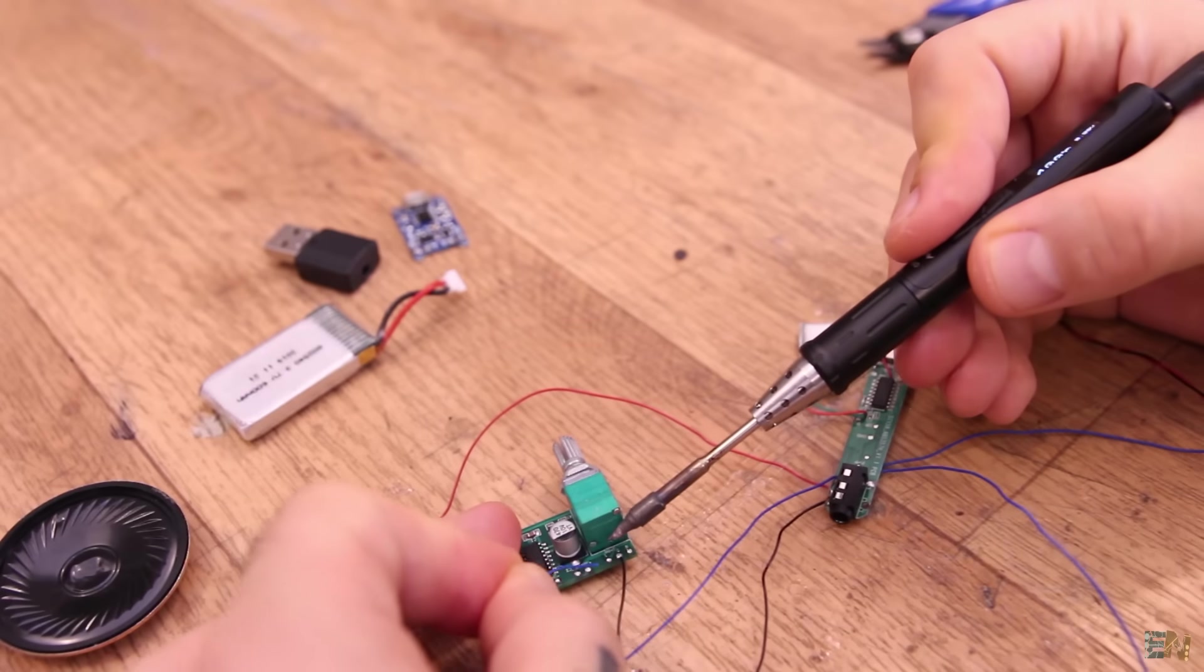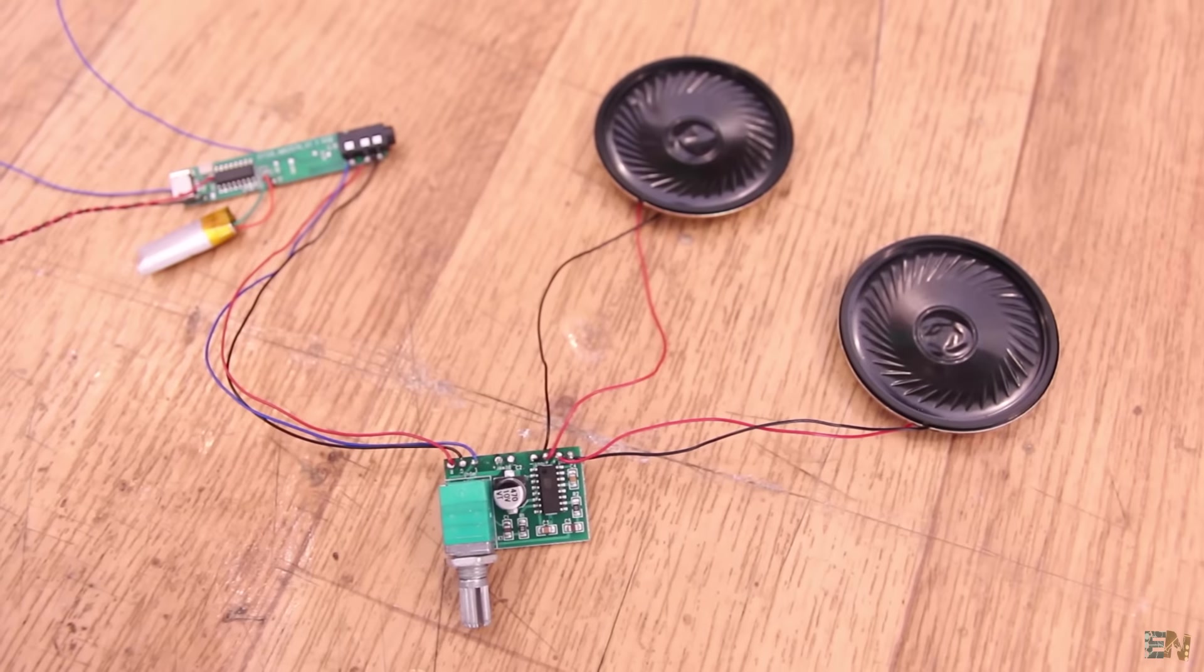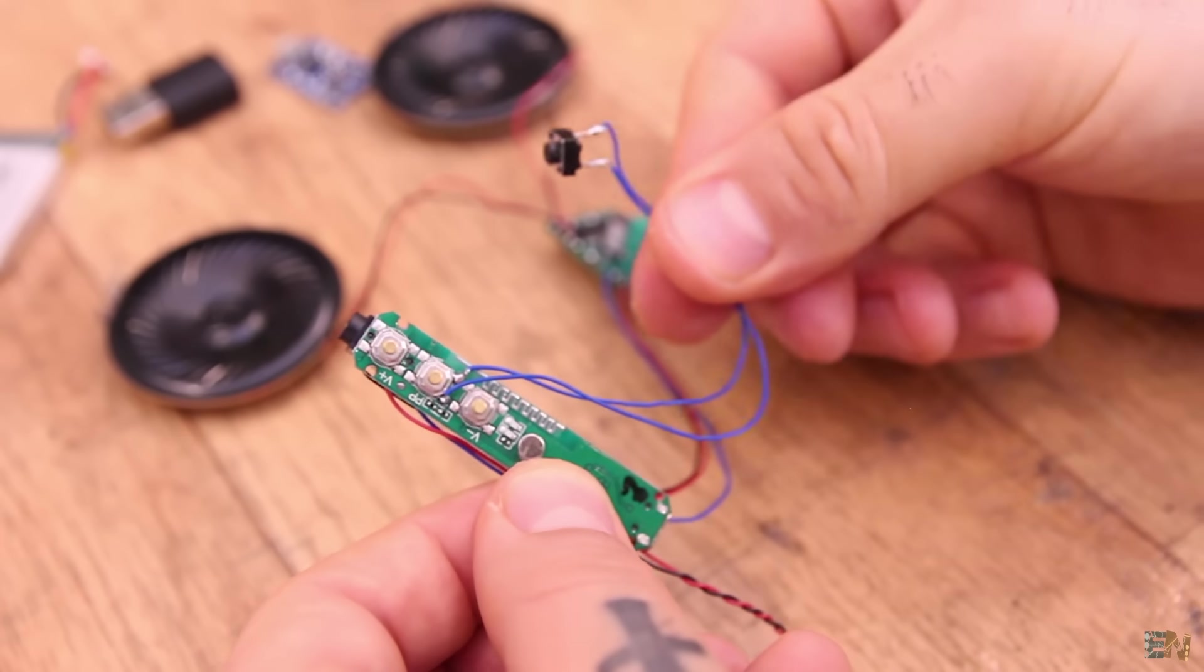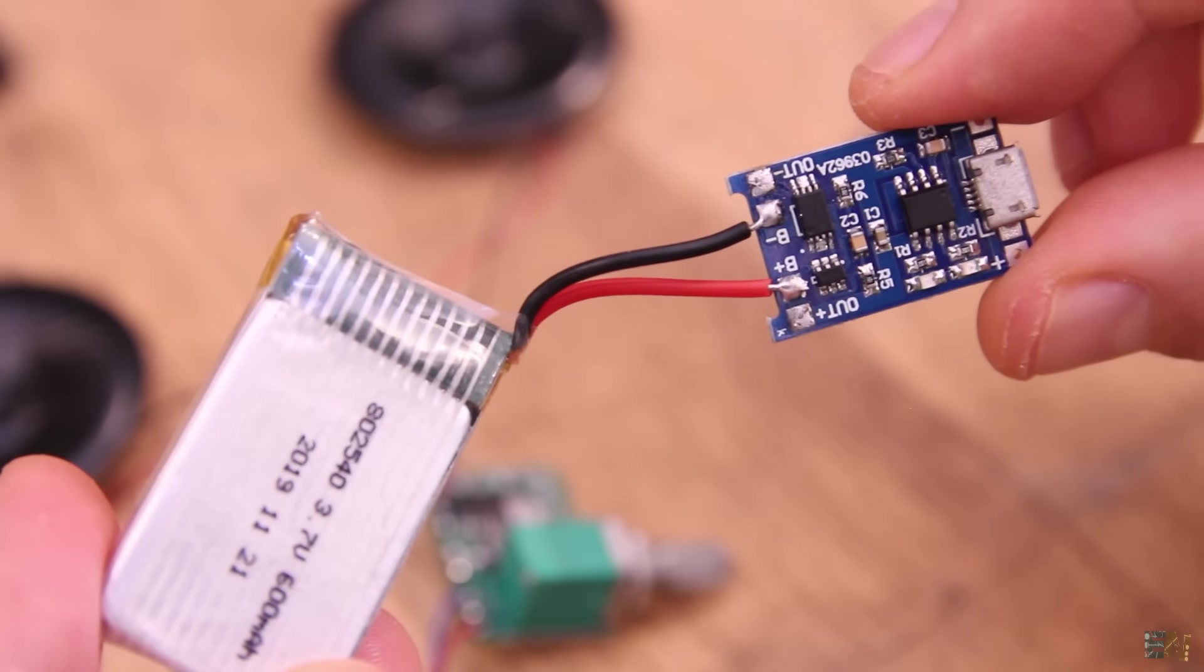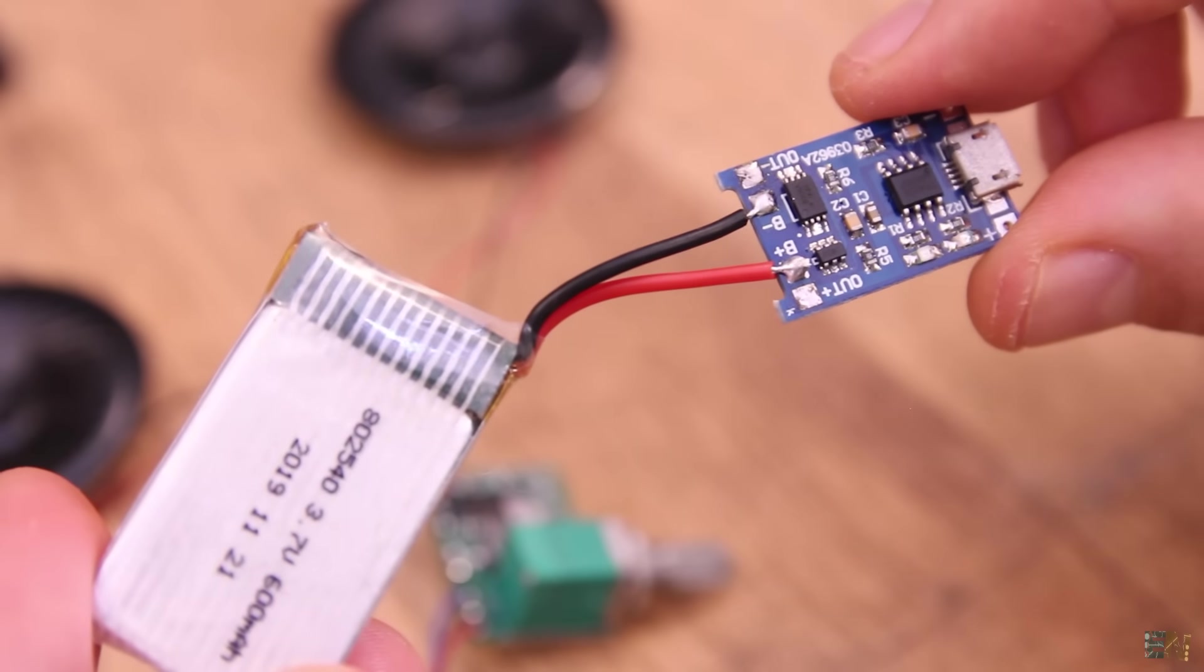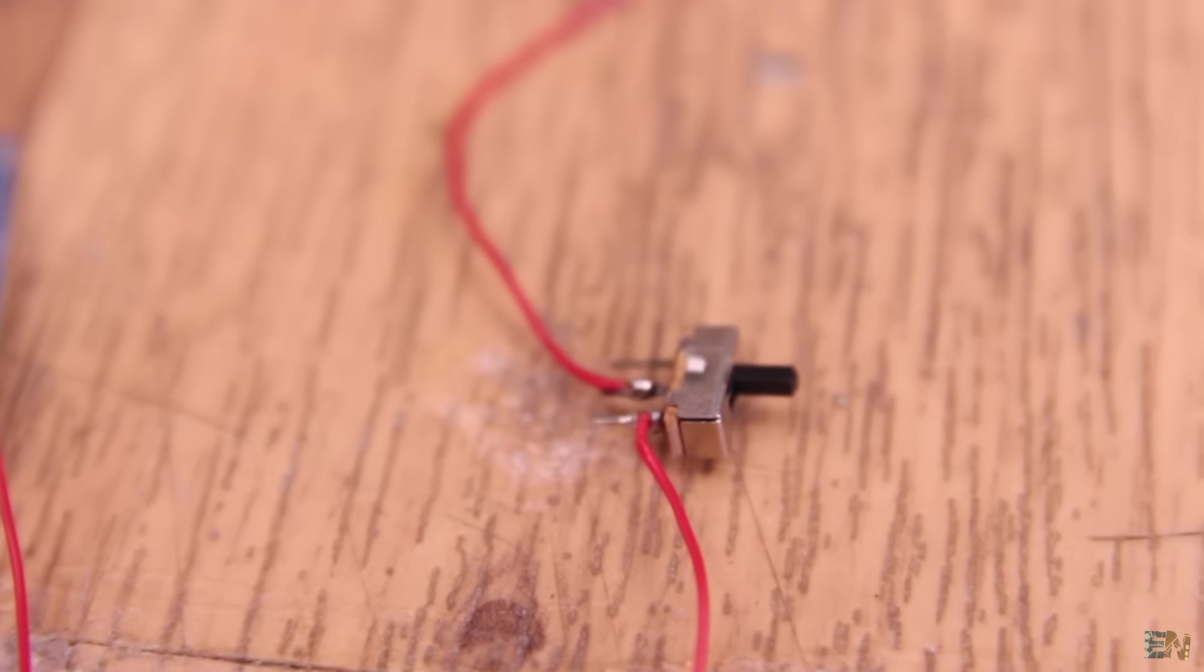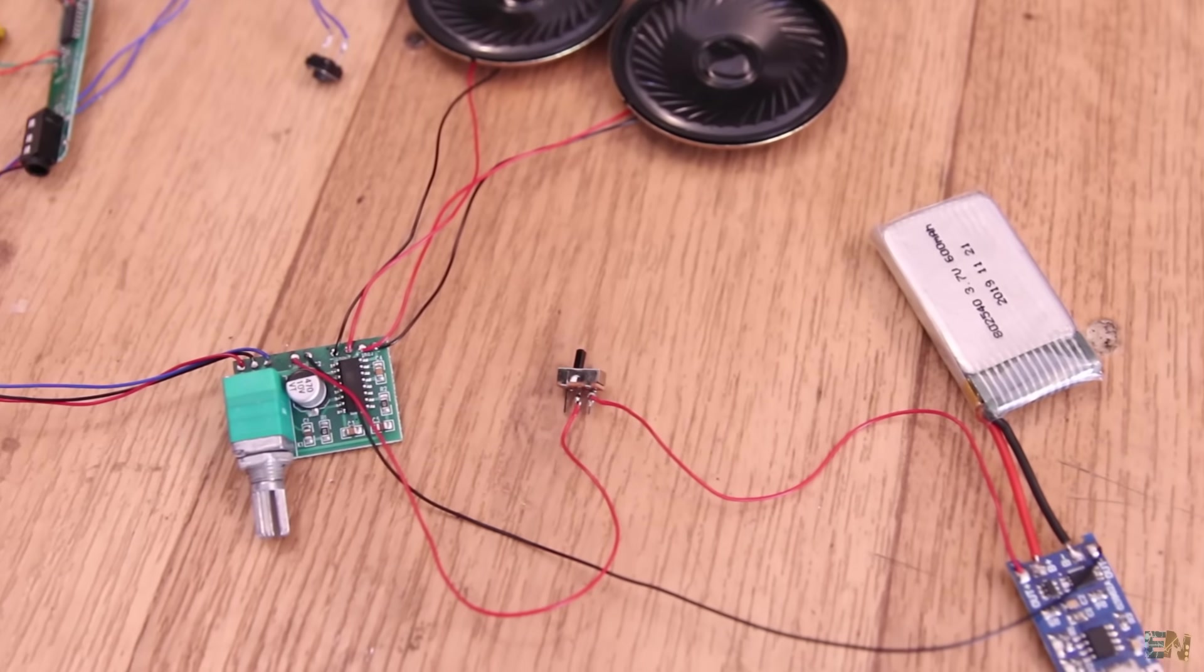I connect the Bluetooth module to the amplifier. Then I solder 2 speakers at the outputs, one for the left and the other one for the right channel. I solder a push button to the middle button of the Bluetooth receiver. Then I solder the battery charger to the battery. Then from the output of the module I solder a black and red wire and the red wire is connected to a switch.